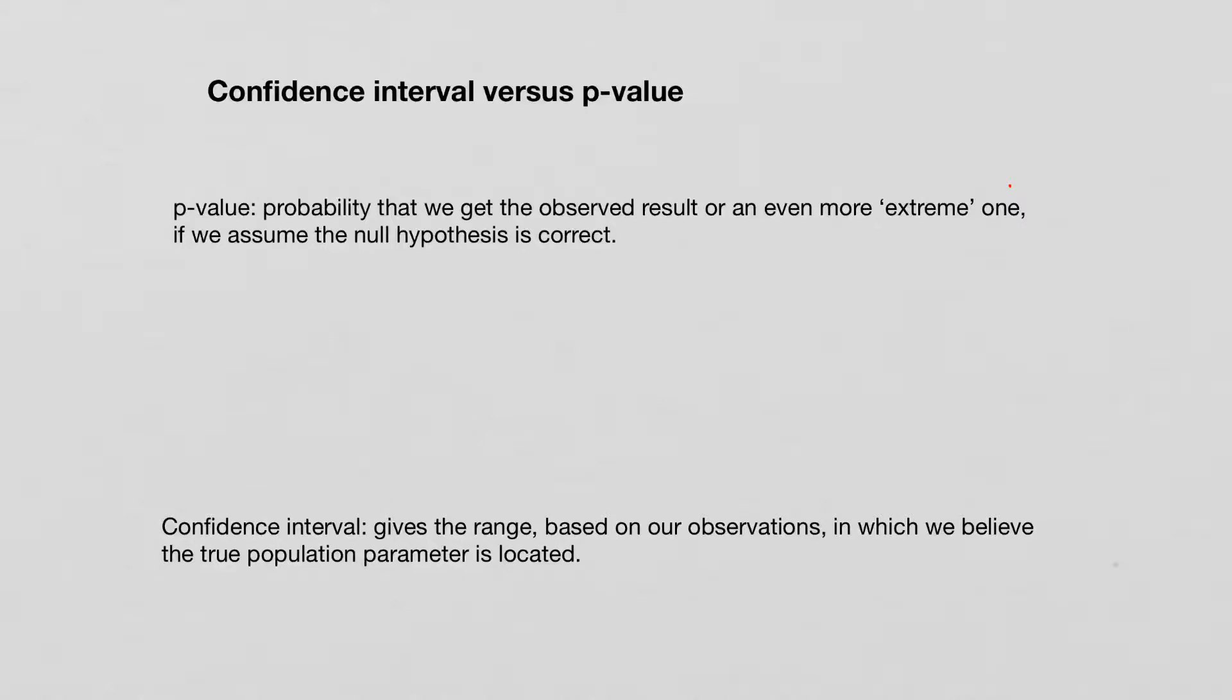Please show both, because confidence interval and p-value actually show two very different things. Let's just simply recap what these two things are. A p-value can best be visualized as the probability that we get the observed result or an even more extreme one if we assume the null hypothesis is correct.